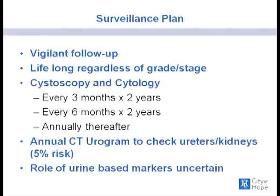The high frequency of local recurrence and potential for stage progression, especially for high-risk patients, highlights the importance of vigilant surveillance with cystoscopy and cytology — lifelong, regardless of grade and stage. Cystoscopy with cytology is recommended every three months for the first two years. Once two years pass without recurrence, surveillance can extend to every six months for two years, then annually thereafter. Annual upper-tract surveillance is required, given the 5% risk of ureteral and renal pelvis involvement. Urine-based markers like NMP22 and FISH remain uncertain and will not replace cystoscopy and cytology.